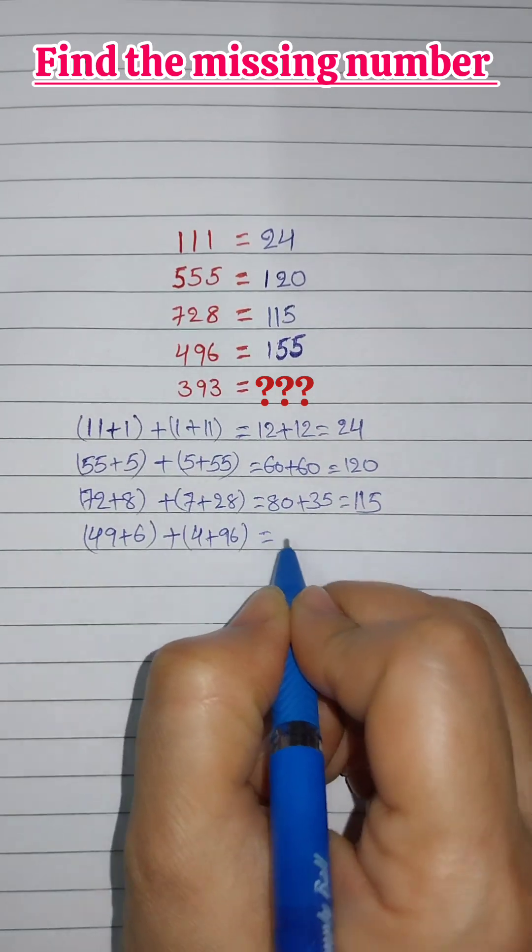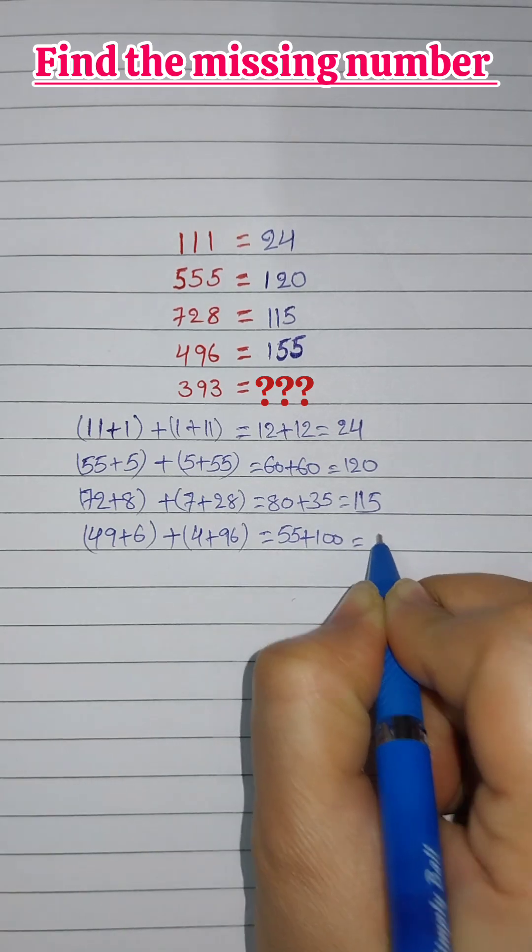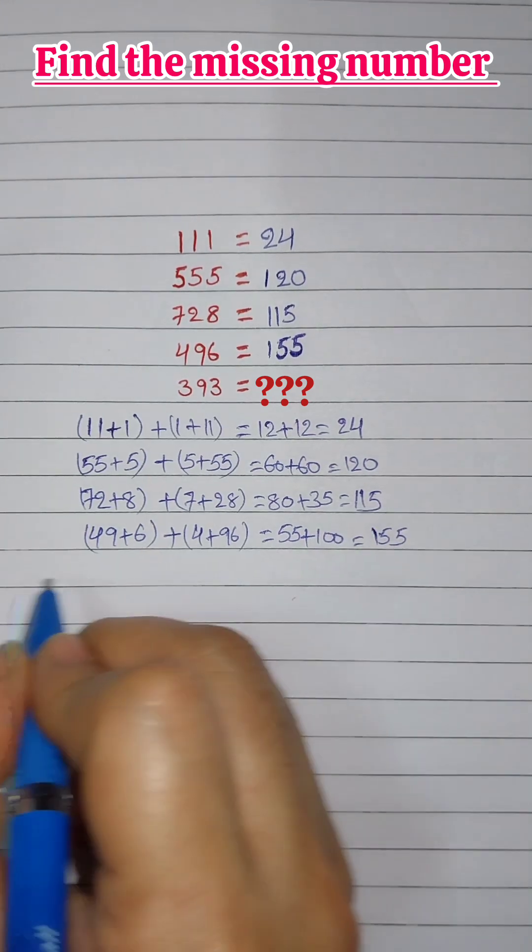For 496, 49 plus 6 plus 4 plus 96 equals 55 plus 100 equals 155.